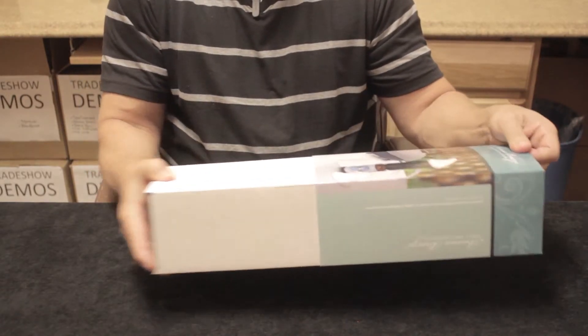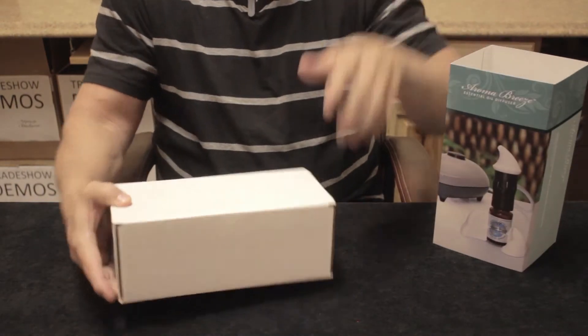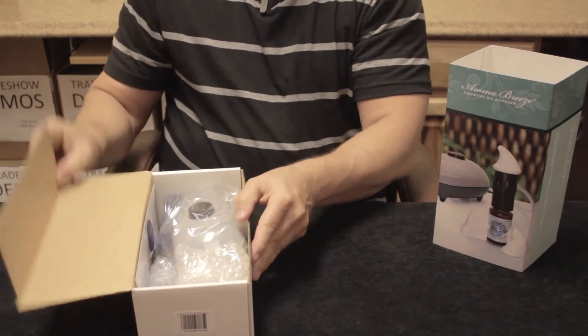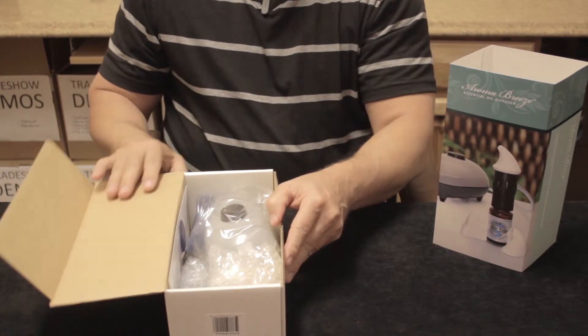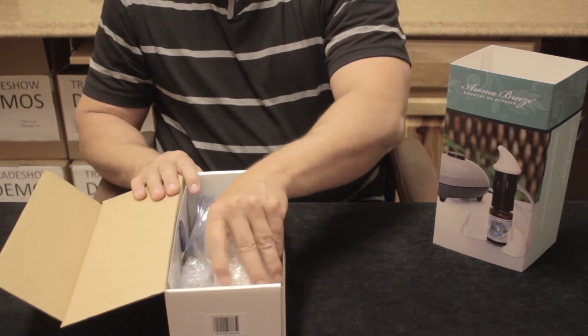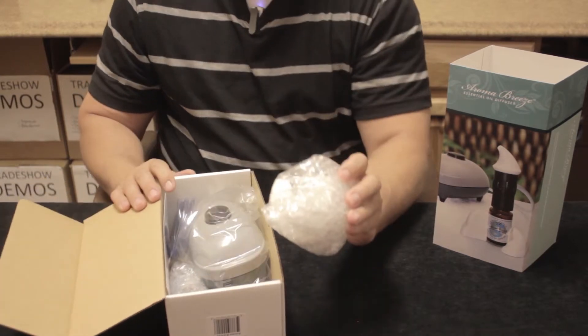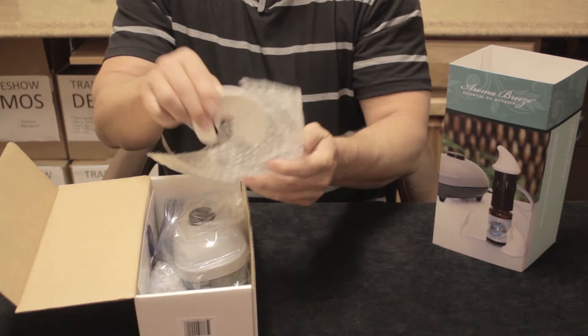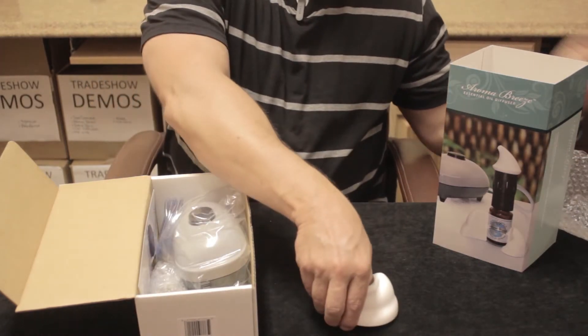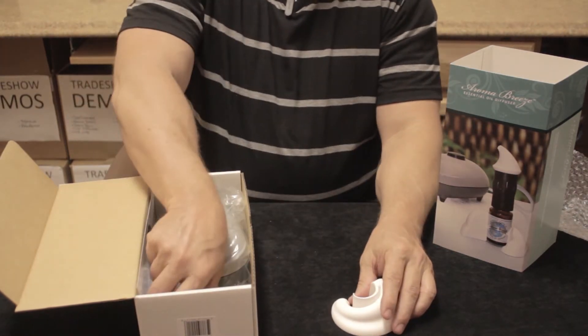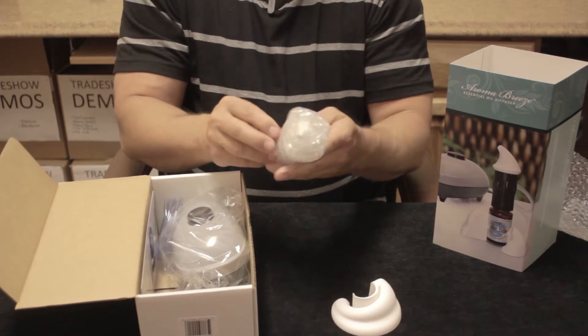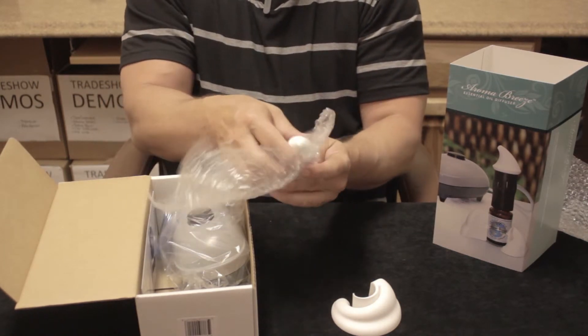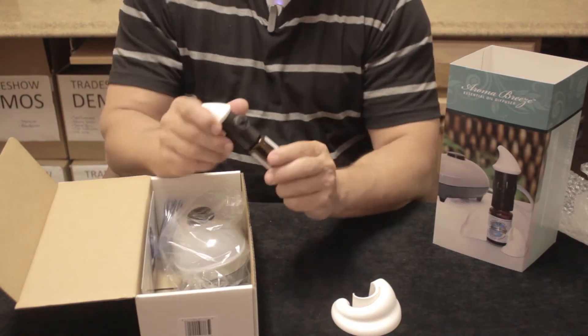What you'll see in here are four different components to the content. First, we have the base. Second, we have the actual atomizer with a bottle attached.